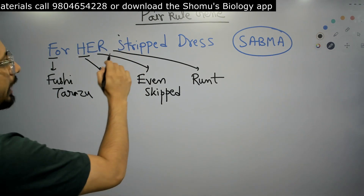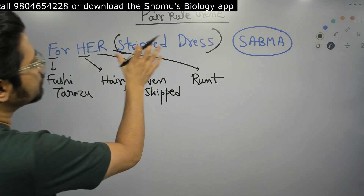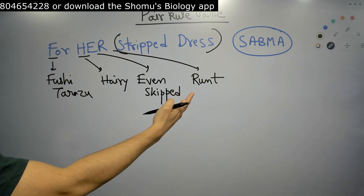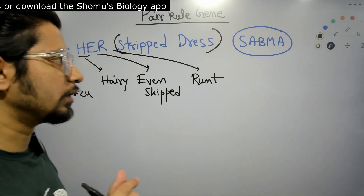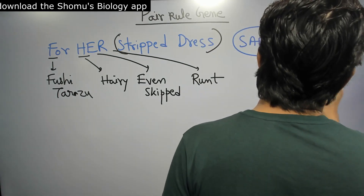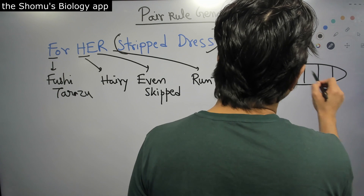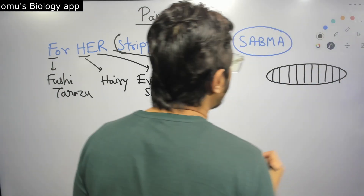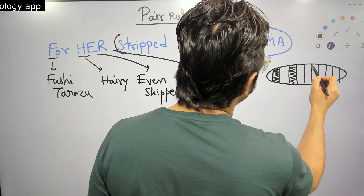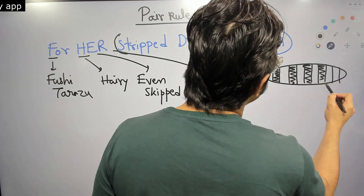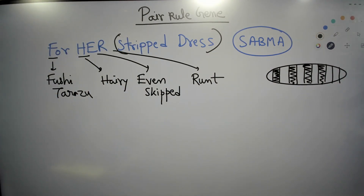The second part, 'striped dress,' is very important. During Drosophila development, the body pattern involves different body segmentation, and the expression of these genes is in one stripe, skipping another, then another stripe, skipping another — so the expression is jumping from one body segment to the other.